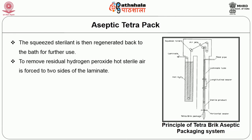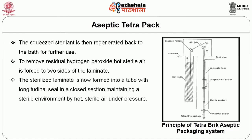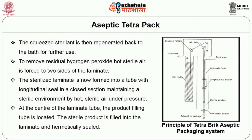To remove residual hydrogen peroxide, hot sterile air is forced to both sides of the laminate. The sterilized laminate is now formed into a tube with a longitudinal seal in a closed section maintaining a sterile environment by hot sterile air under pressure. At the center of the laminate tube, the product filling tube is located. The sterile product is filled into the laminate and hermetically sealed.